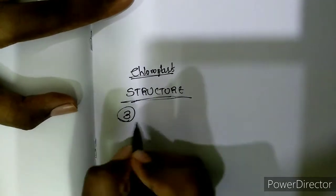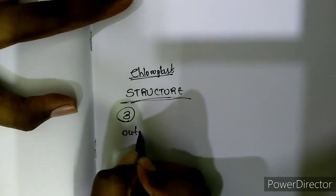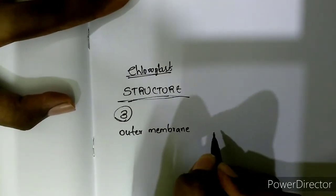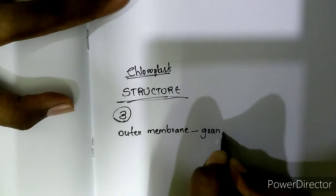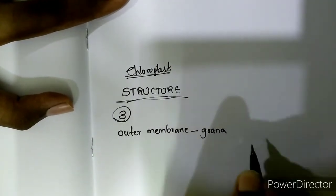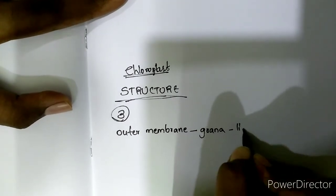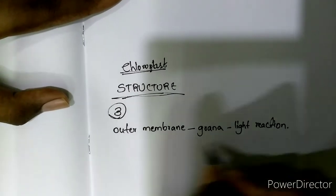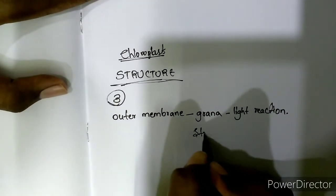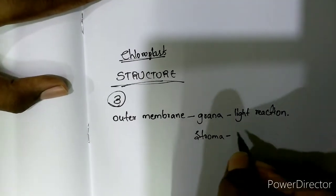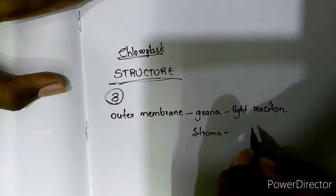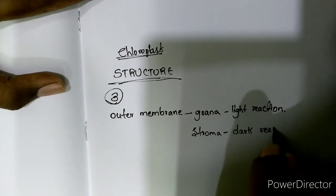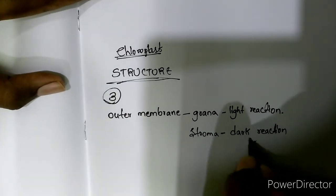Chloroplast contains three membranes. The outer membrane has a stacked sac-like structure which is called grana. Grana is a site for trapping of solar energy, or grana helps in light reaction. The other membrane is stroma. Stroma is a site for the happening of dark reaction, which we can also call enzymatic reaction.